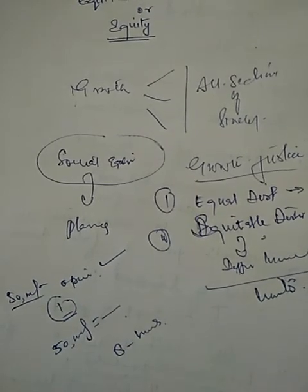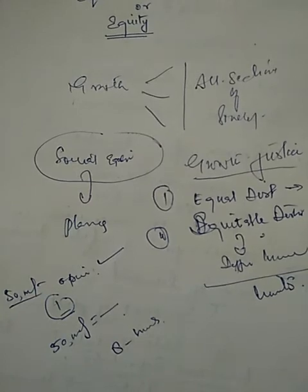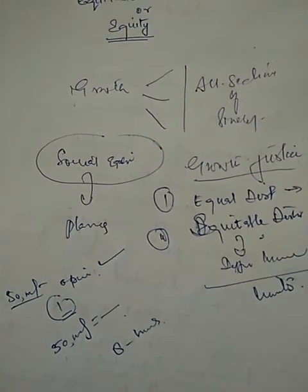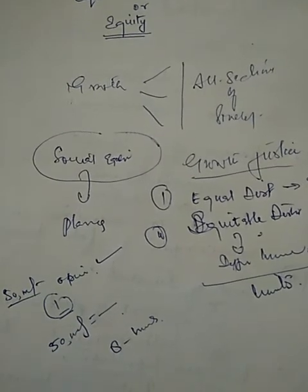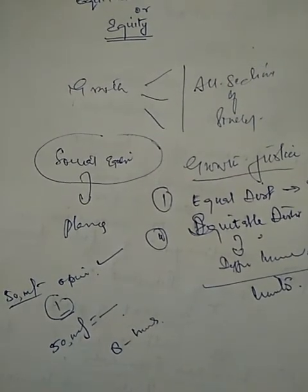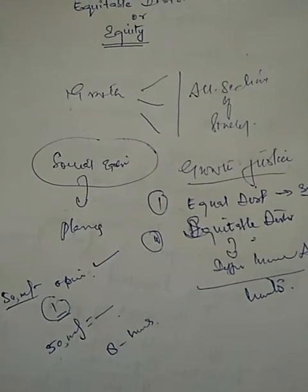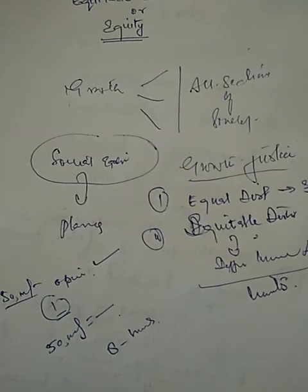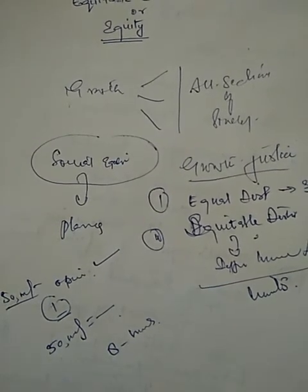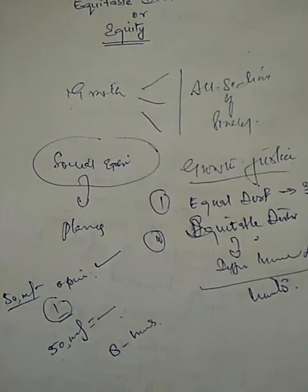Growth means rise in GDP. Development means growth with equity as well as structural change in the economy. Equity means equitable distribution of income so that benefits of growth are shared by all sections of society. Structural change implies a shift in sectoral share in GDP - the share of secondary and tertiary sectors should gradually rise while that of primary sector should gradually fall.